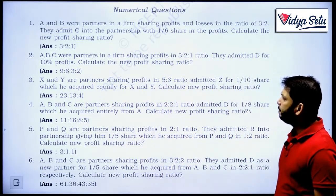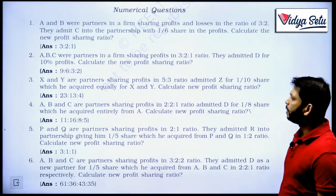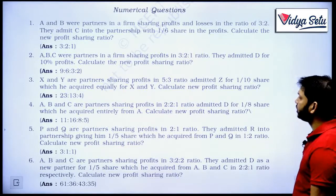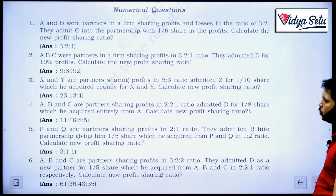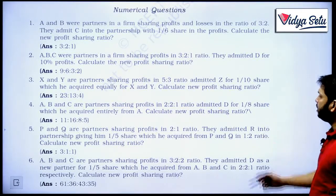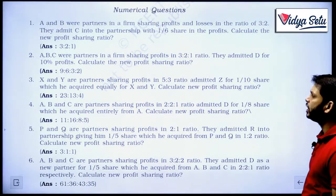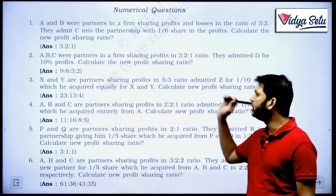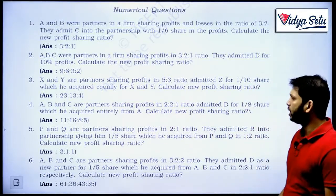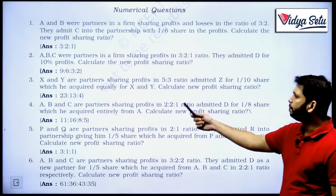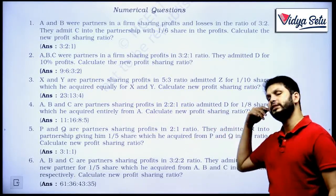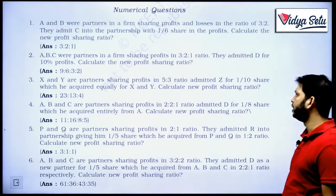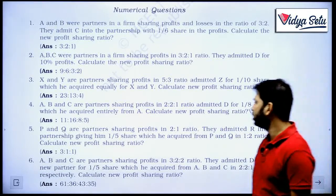Let us see: A, B and C are partners sharing profits in the ratio 2 to 2 to 1, and D is admitted for 1/8 share which he acquired entirely from A. So B and C were not sacrificing at all. Calculate the new profit sharing ratio.